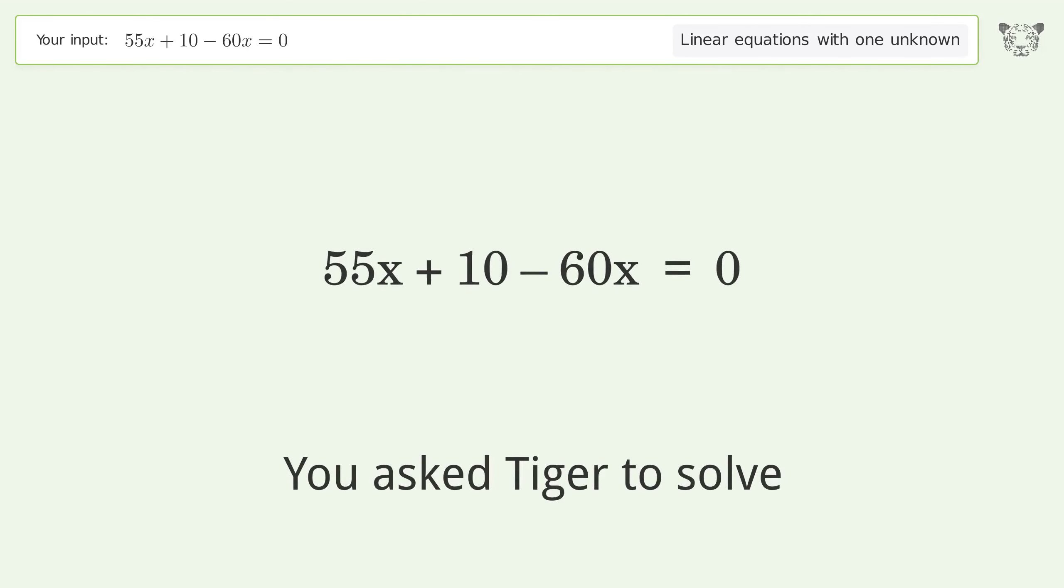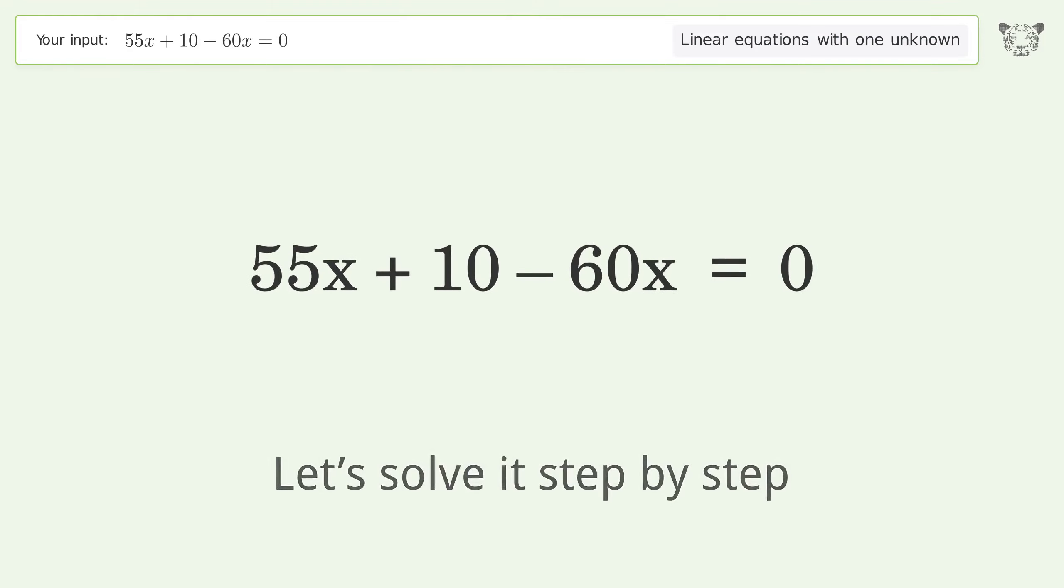You asked Tiger to solve this. This deals with linear equations with one unknown. The final result is x equals 2. Let's solve it step by step. Simplify the expression, group like terms.